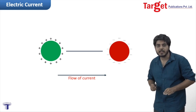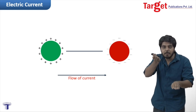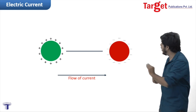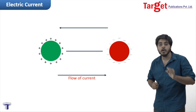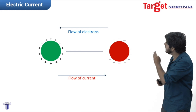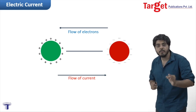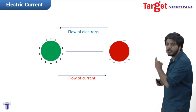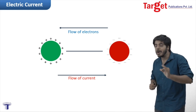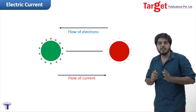The red sphere has an excess of electrons and the green sphere has a deficiency of electrons. So electrons flow from the red sphere to the green sphere. This means current flows from the positive sphere to the negative sphere, while electrons flow from the negative sphere to the positive sphere. This is the convention of flow of current.